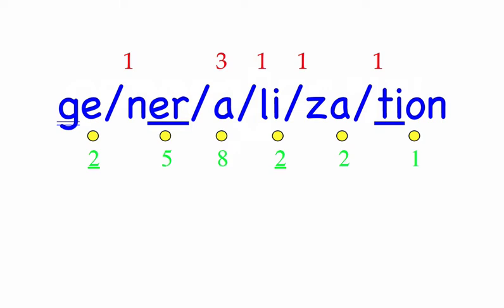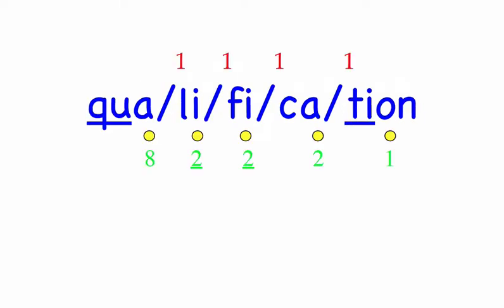Qualification. What qualification do you have to apply for this job? Five syllables. First syllable: Qua, three sounds. Li, two sounds, L-I. Fi, two sounds, F-I. K, two sounds, K-A. Sean, three sounds, Sh-Ah-N. Qualification. Mark the word. Qualification.